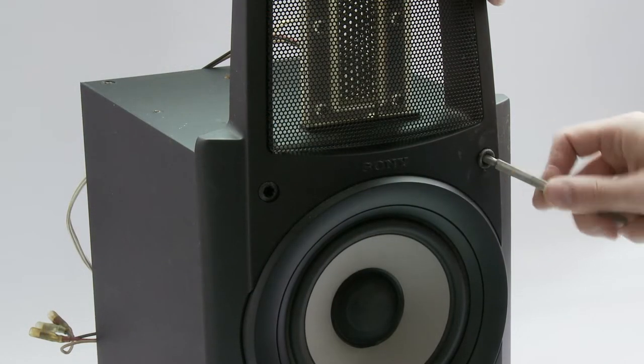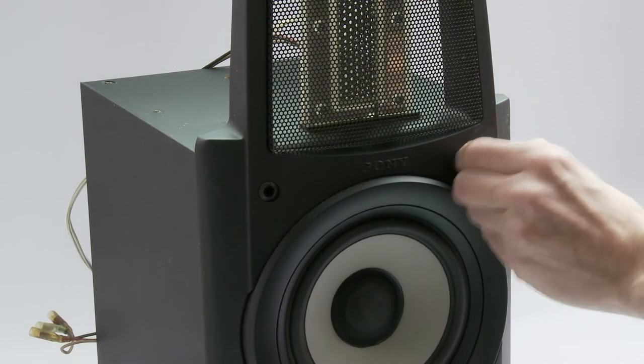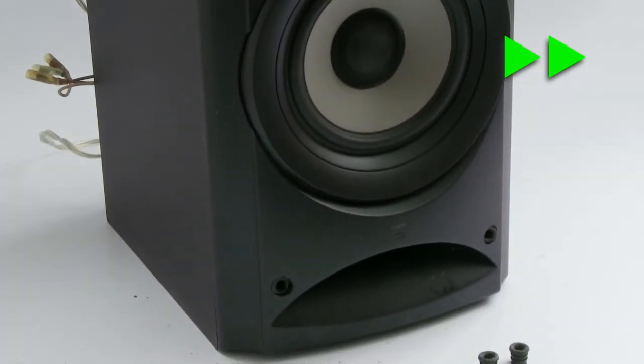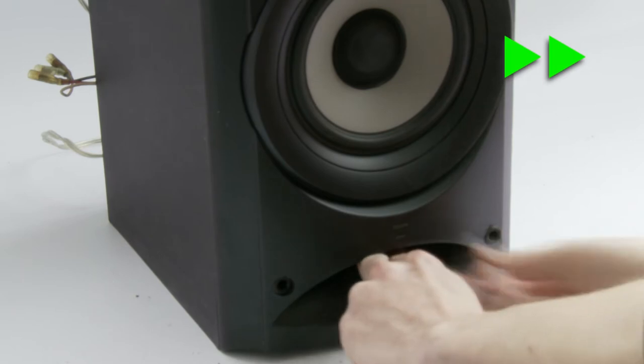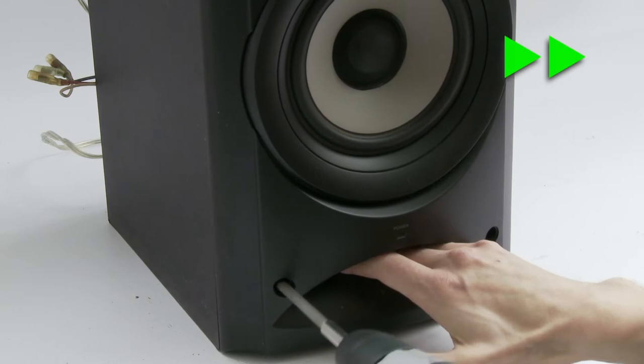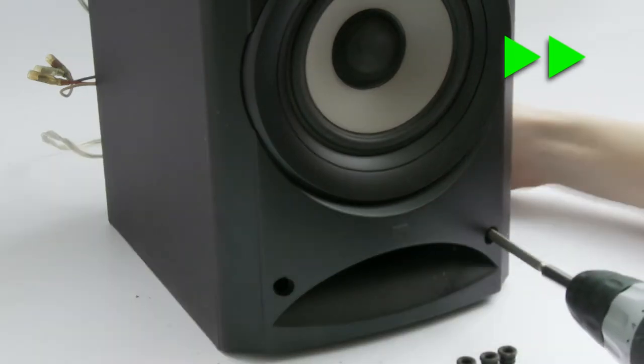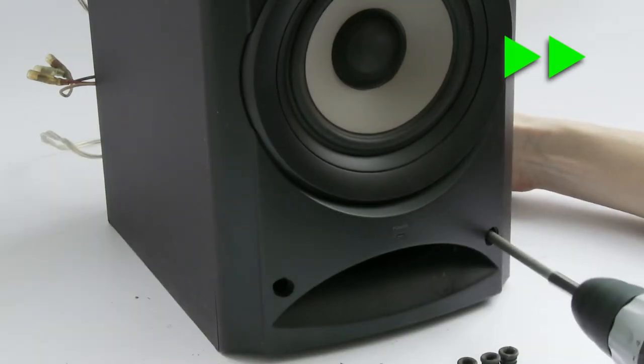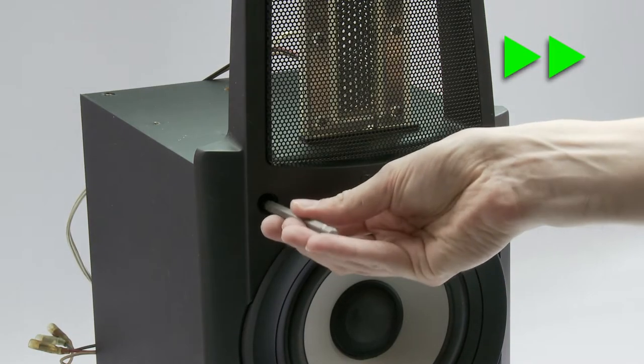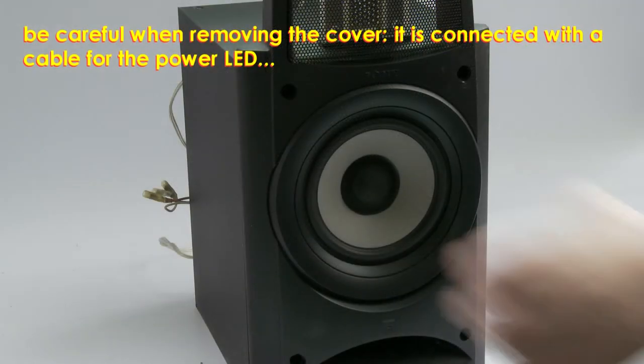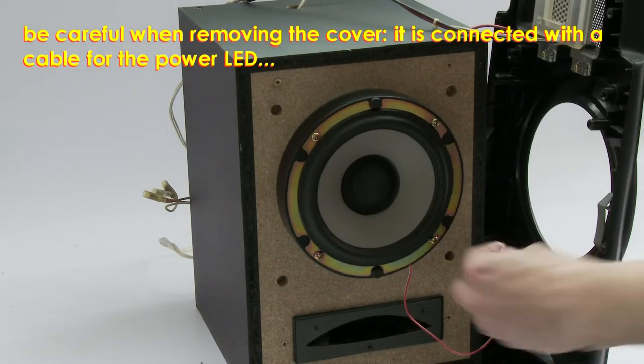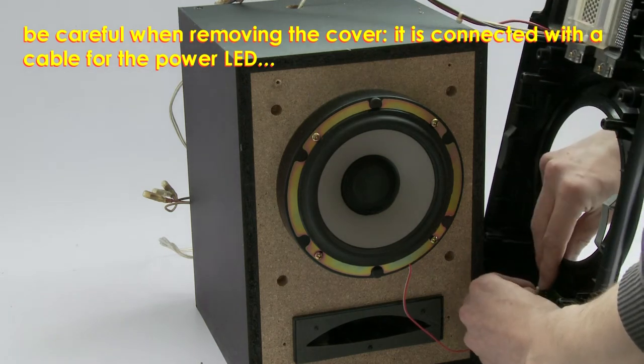Remove the rubbers of the cover. The screws are behind those rubbers. Be careful when removing the front cover. The power LED has a small connector and cable attached to it.